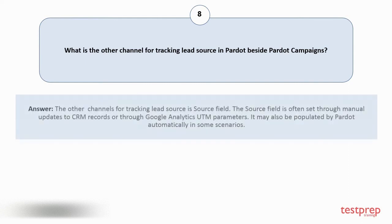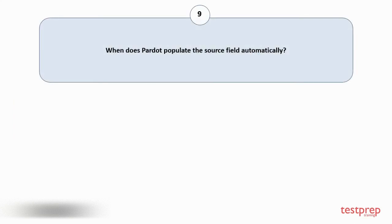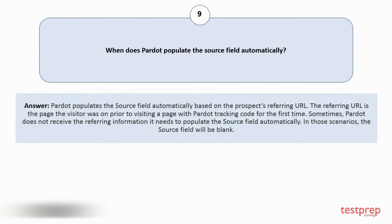Question number eight: What is the other channel for tracking lead source in Pardot, beside Pardot campaigns? The other channel is the source field. The source field is often set through manual updates to CRM records or through Google Analytics UTM parameters. It may also be populated by Pardot automatically in some scenarios.